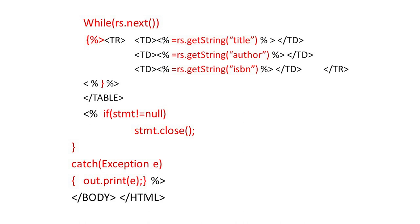Error handling is done using a try-catch block. If there is any problem — such as in database connectivity or any other issue — an exception e is caught and out.print(e) displays the error message. Also, in the finally block, an if statement checks if the statement object is null; if not null, the statement is closed properly. This handles all types of exceptions that may be generated.